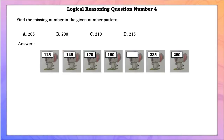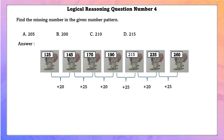Logical reasoning question number 4. Find the missing pattern in the given figure. From 125 to 145, 20 is added; from 145 to 170, 25 is added. Adding 20 and 25 alternately is the pattern. Therefore, the missing figure will be 215.